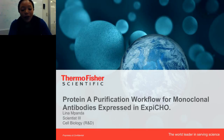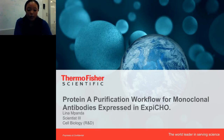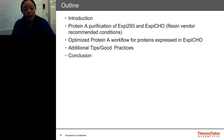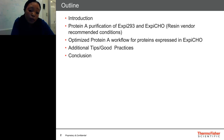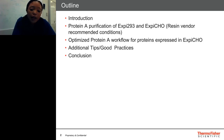Thank you, Brenda. As Brenda mentioned, I'm going to talk about protein A purification workflow for monoclonal antibodies expressed in XP-CHO. Just a brief outline: I'm going to go over some introductory material, and then I'm going to talk about protein A purification of XP-293 and XP-CHO using resin vendor recommended conditions. What you'll see as I go through the data is that the resin vendor recommended conditions were found to be sub-optimal for XP-CHO, so we went ahead and optimized a protein A workflow specific for proteins expressed in XP-CHO. After that, I'm going to go over some additional tips and good practices, followed by a conclusion.